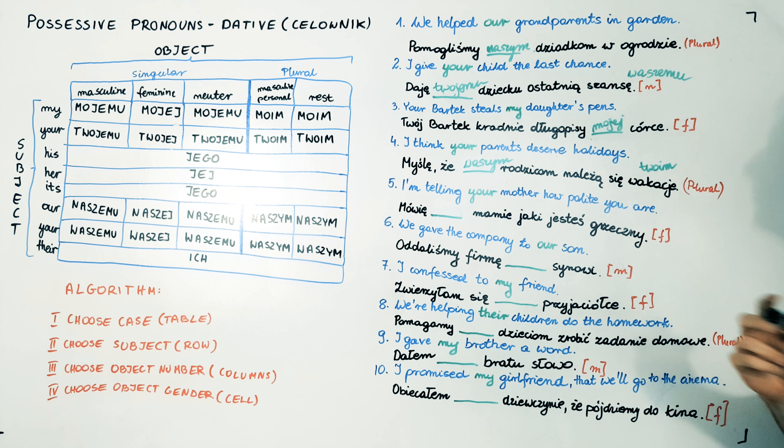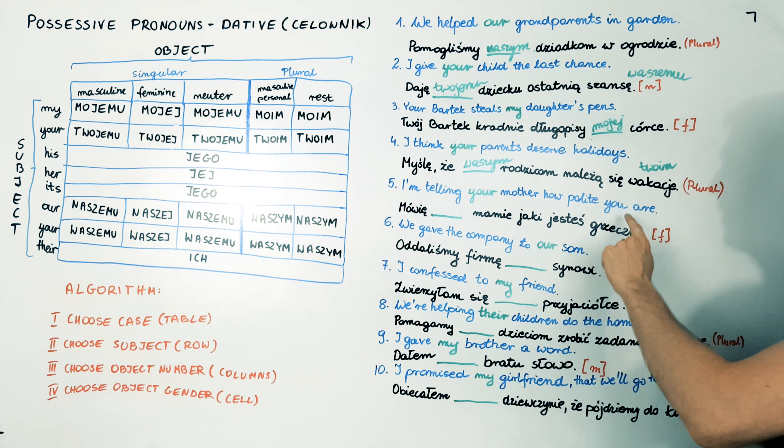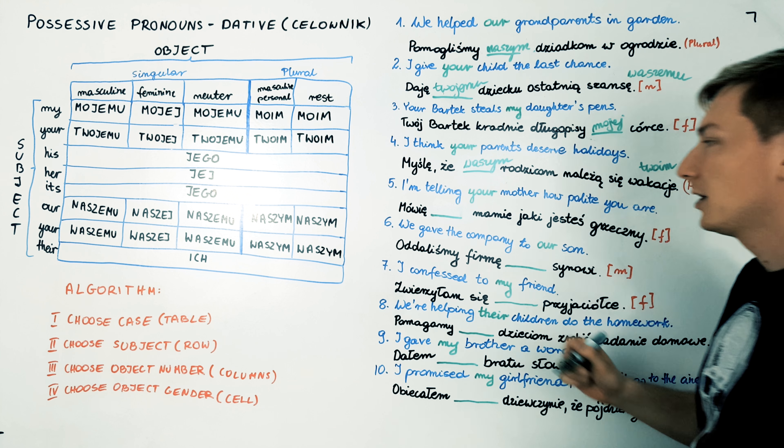Twoim rodzicom należą się wakacje. Okay. Try the next one. I'm telling your mother how polite you are. Mówię twojej mamie, jaki jesteś grzeczny.